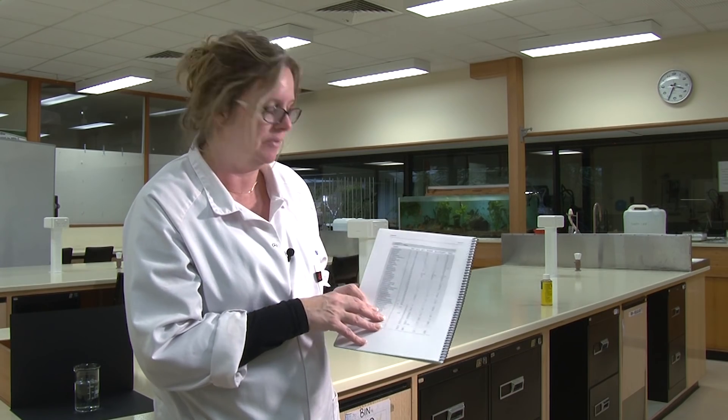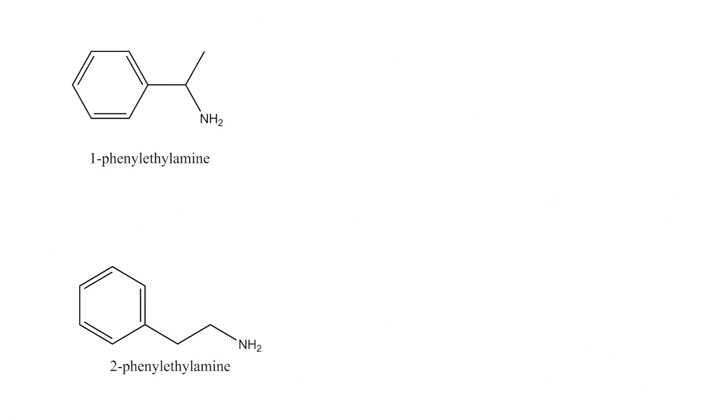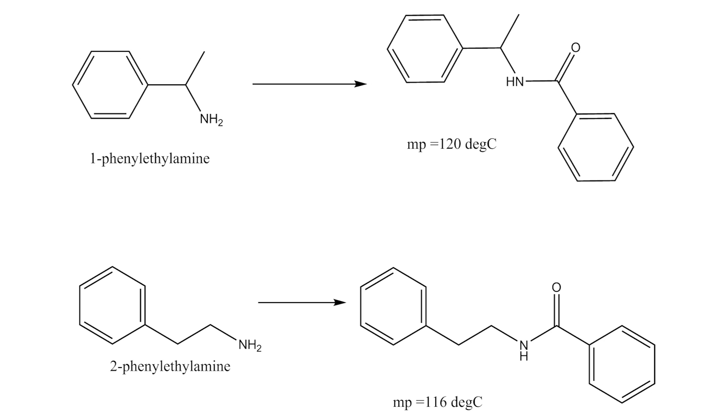The final step for confirmation is to prepare a derivative from your unknown. You need to choose a derivative that has a melting point that's really different from your starting material and also really different from other derivatives. For example, if you weren't sure whether you had one phenyl ethyl amine or two phenyl ethyl amine, and you made the carbide derivative, they only have a difference of four degrees in melting point, so you still won't be able to tell those apart. Make sure the derivative you choose has a very different melting point.